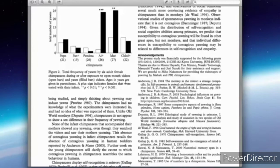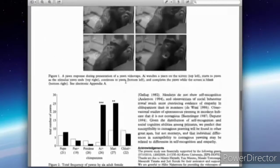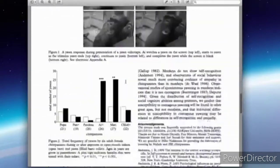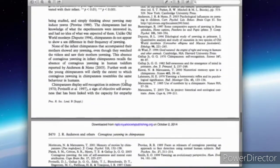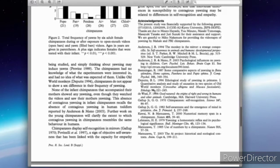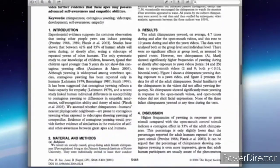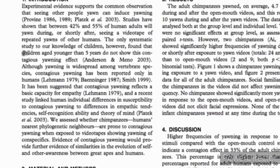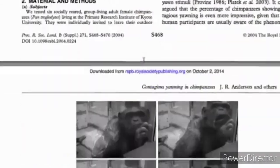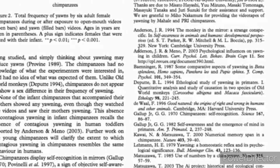Another step to find more information about your research is to go to the end of the paper. The last part of the paper is the list of references. The list of references will give you other research papers that came before this research paper. For example, in this paragraph it says children aged younger than five years do not show this contagious yawning effect, and then here's the citation: Anderson and Menno 2003. This information comes from that research paper. How do we find it? Come to the reference list.